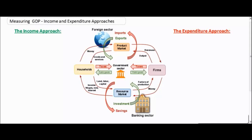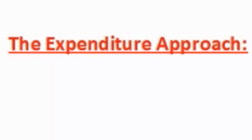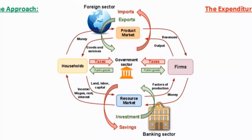Hello everybody. In today's video lecture we're going to be talking about macroeconomics, specifically the measurement of gross domestic product. In this activity we'll be talking about the circular flow of the nation's economy, and we'll discuss the two different ways a nation's GDP can be measured — using either the income approach or the expenditure approach. We will apply these two methods to the circular flow model shown here.